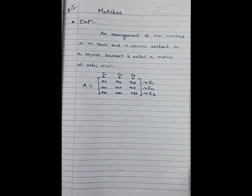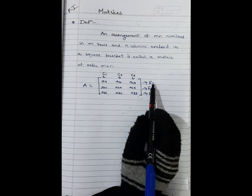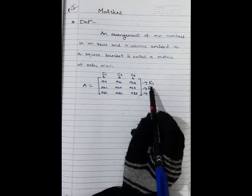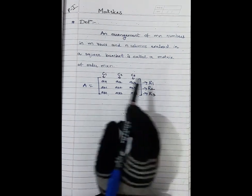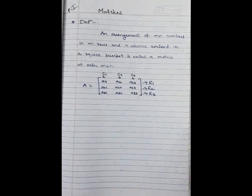In this matrix there are three rows — R1, R2, R3 — and three columns.